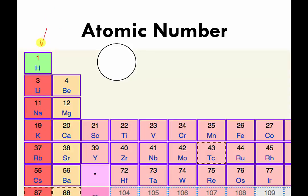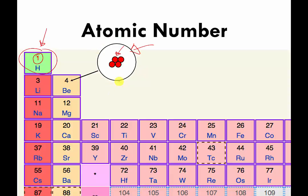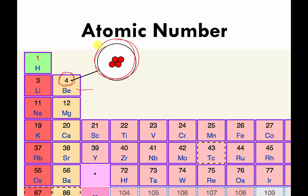Now I'll zoom in on the periodic table. Remember that red circles are my cartoon version of a proton. Because the number one is written here, this is a cartoon version of a hydrogen atom — it only has one red circle, meaning one proton. If we have four red circles, we find the box with a four in the periodic table, and that makes it a beryllium atom — four red circles means four protons.